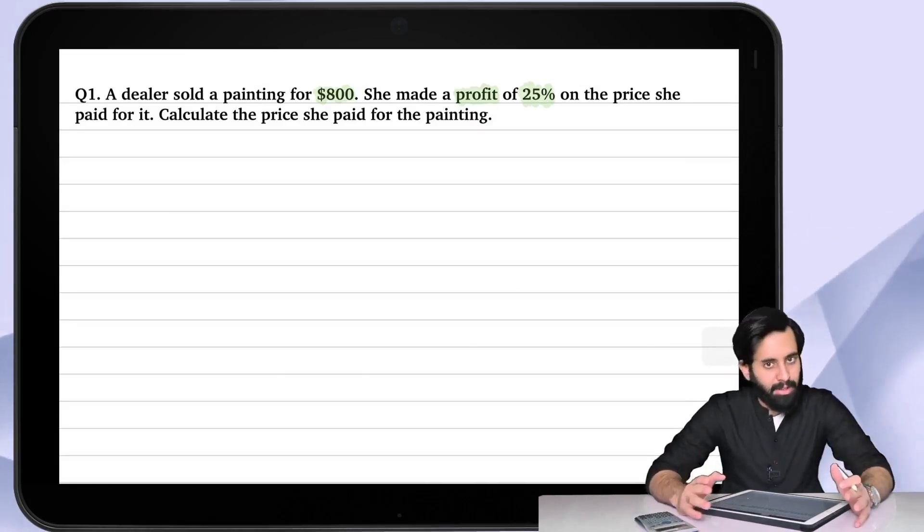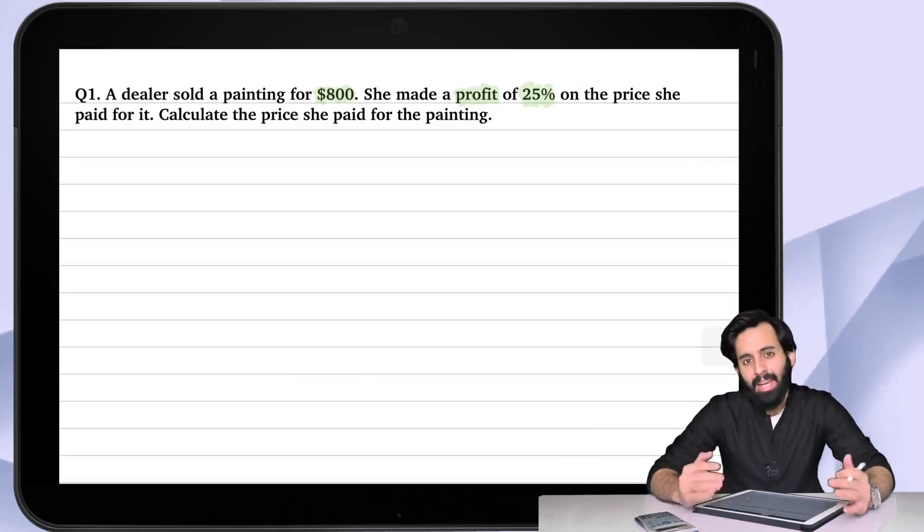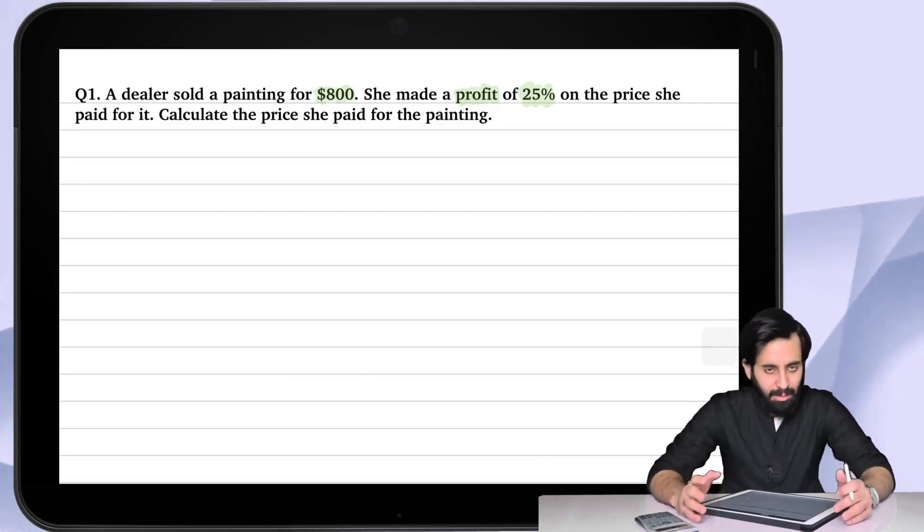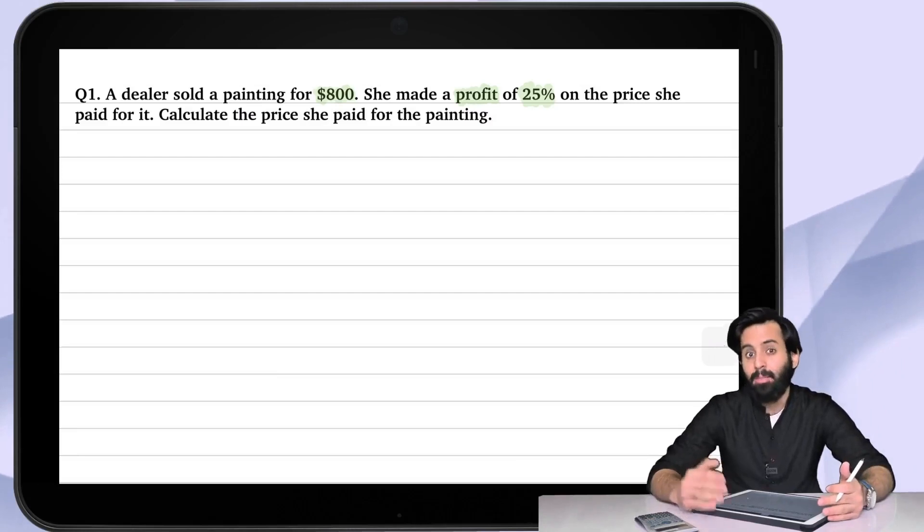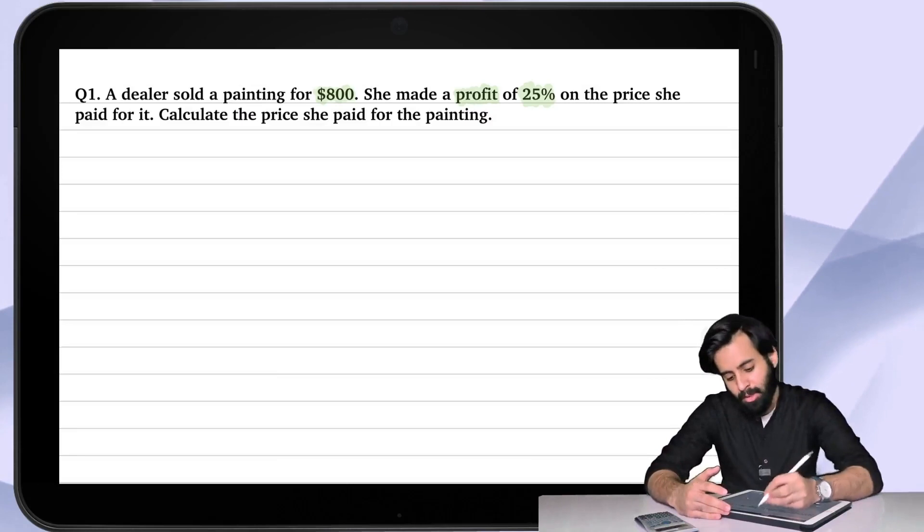After selling the painting for $800 she has made a profit of 25 percent. So what that means is that this $800 contains a 25 percent profit. That means that the price she is getting for it is 25 percent more than the price she initially paid for it or the price that she bought it for.